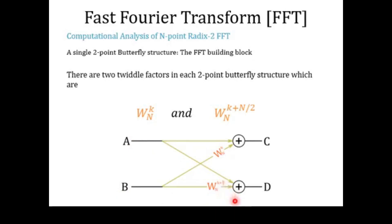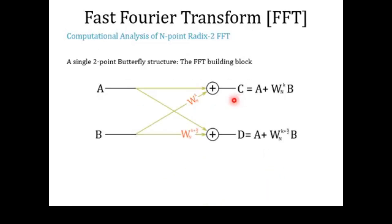In every single butterfly operation we provide two samples at the input, use two twiddle factors WNK and WNK+N/2, and get two frequency domain output values C and D. The expressions are: C = A + WNK·B, and D = A + WNK+N/2·B.